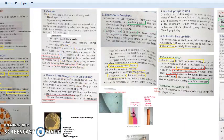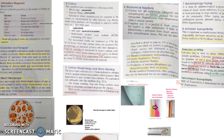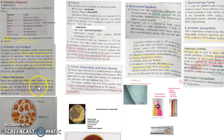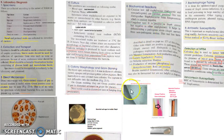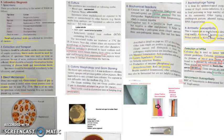For laboratory diagnosis we saw specimen collection and transport, direct microscopy, culture on salt milk agar, Ludlam tellurite media, nutrient agar, and blood agar, motility by hanging drop, biochemical reactions (urease positive, mannitol fermented with acid but no gas), tube coagulase, bacteriophage typing, molecular typing by PCR, and antibiotic susceptibility testing.